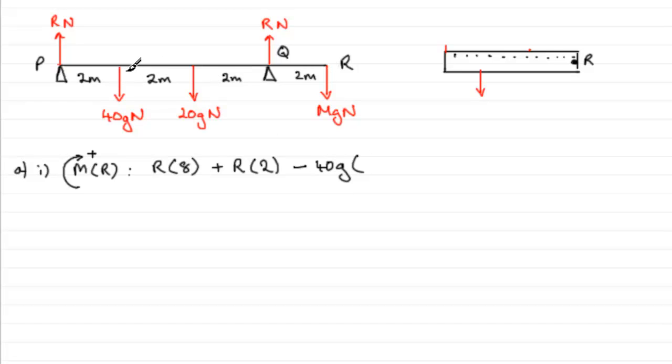Similarly, if we push with the 20G in this direction, it too is going to be turning in the anti-clockwise direction, so be minus, minus 20G times this distance back to R, which will be 4 meters.